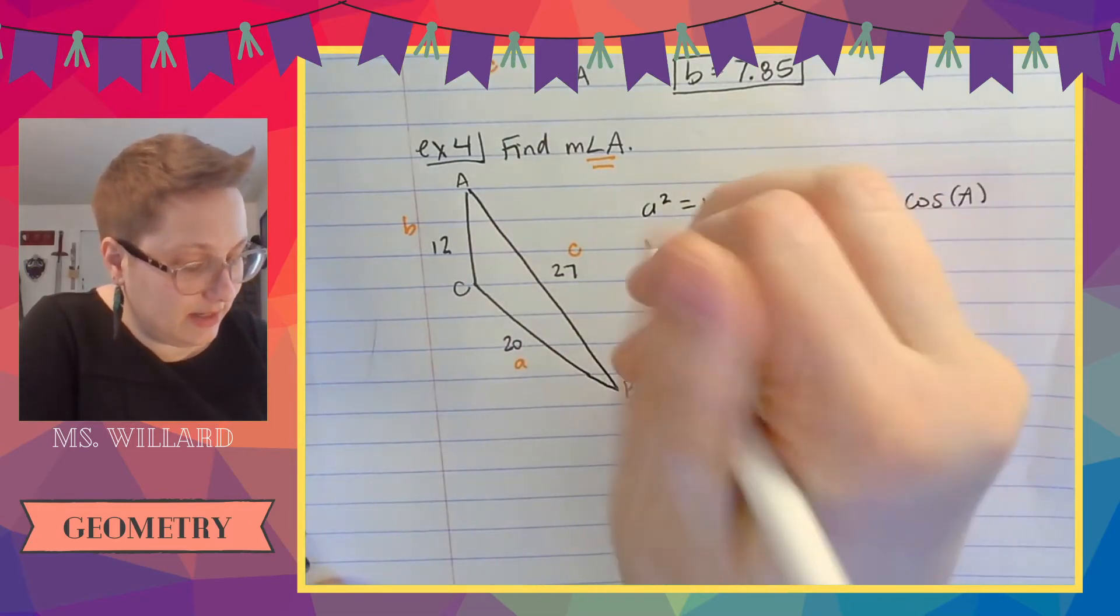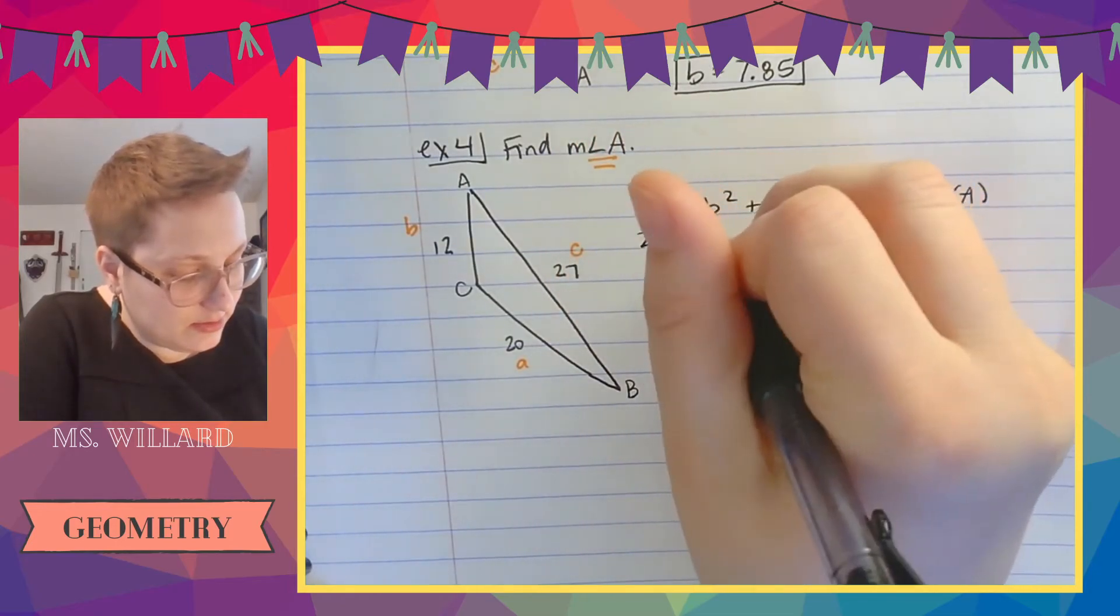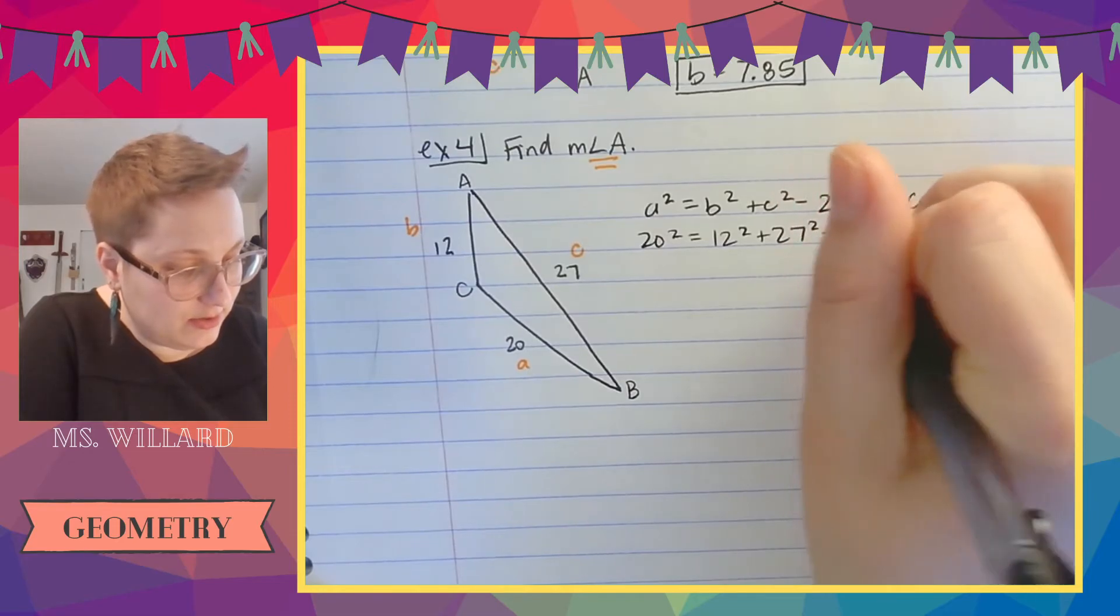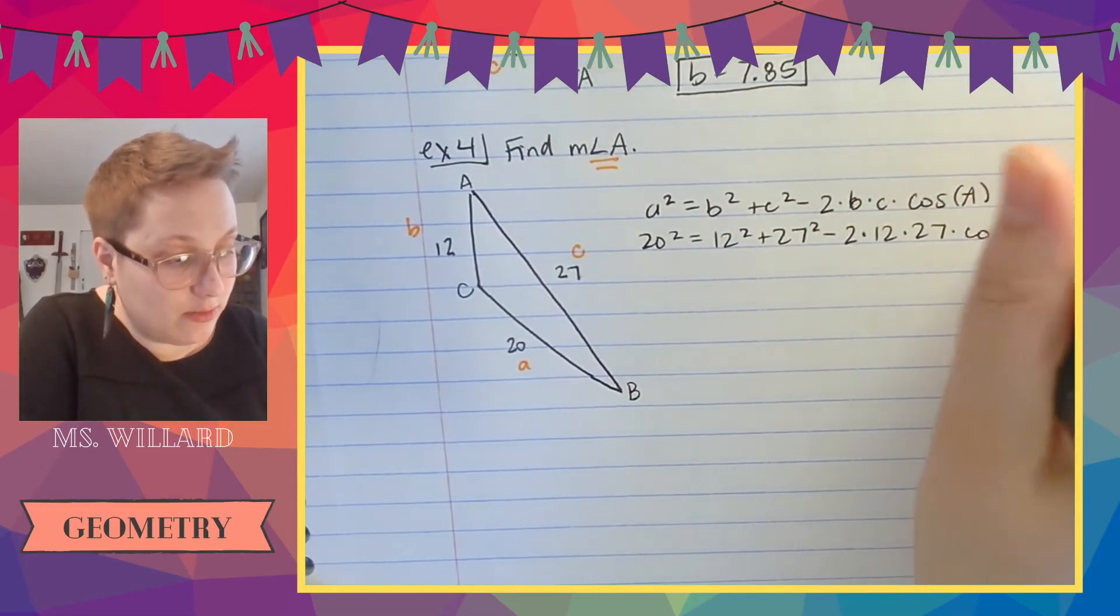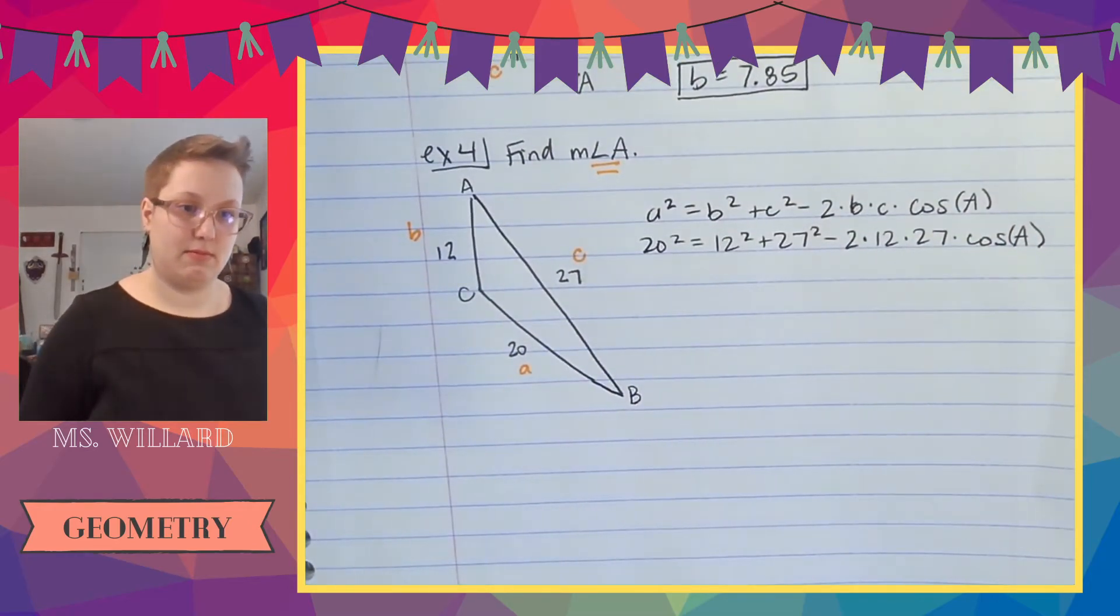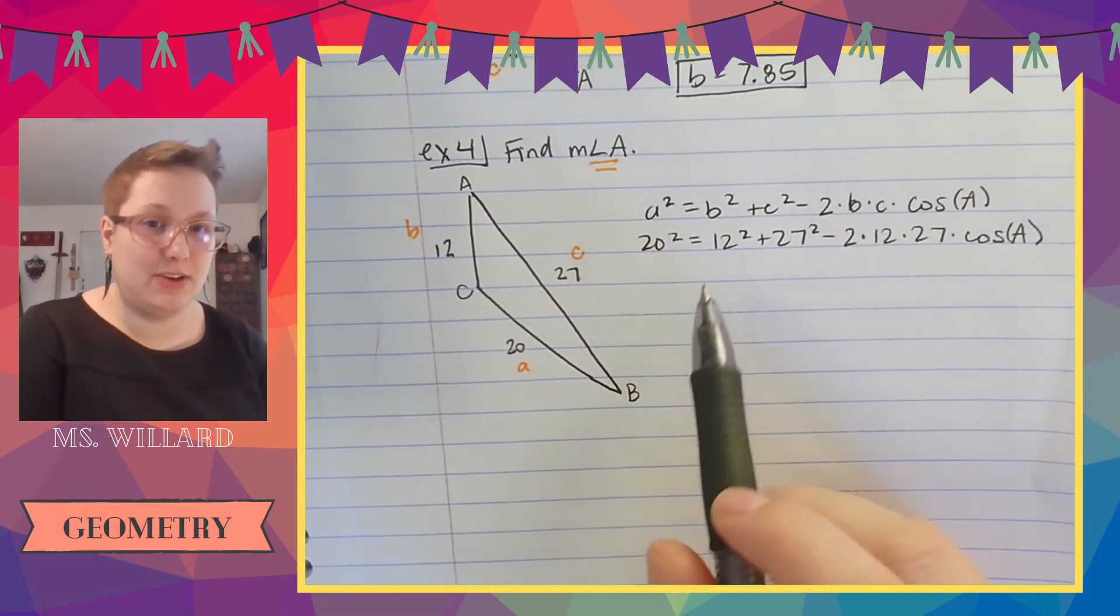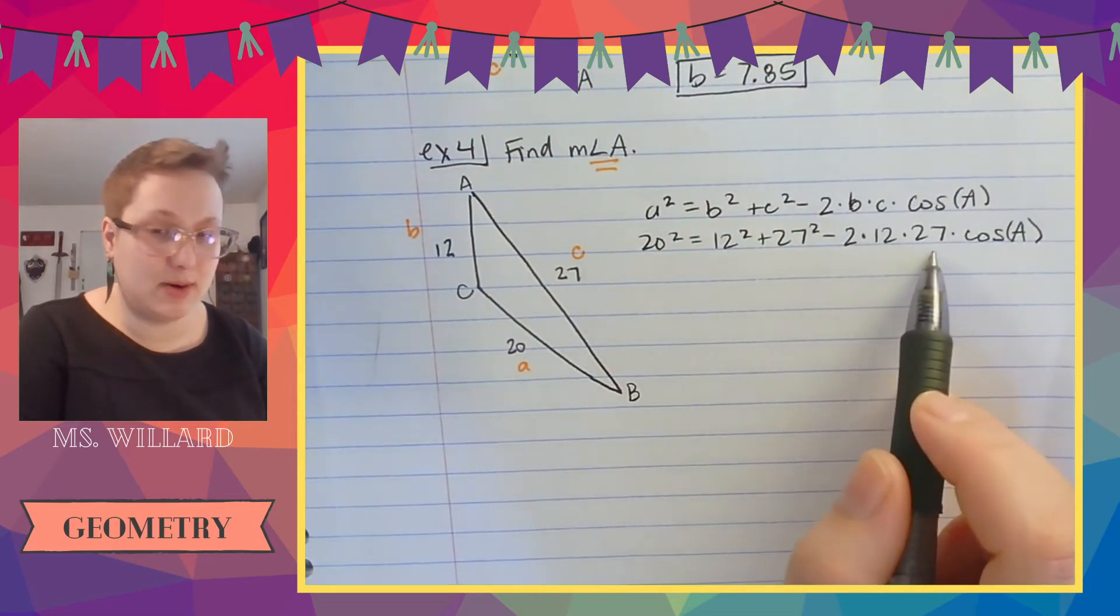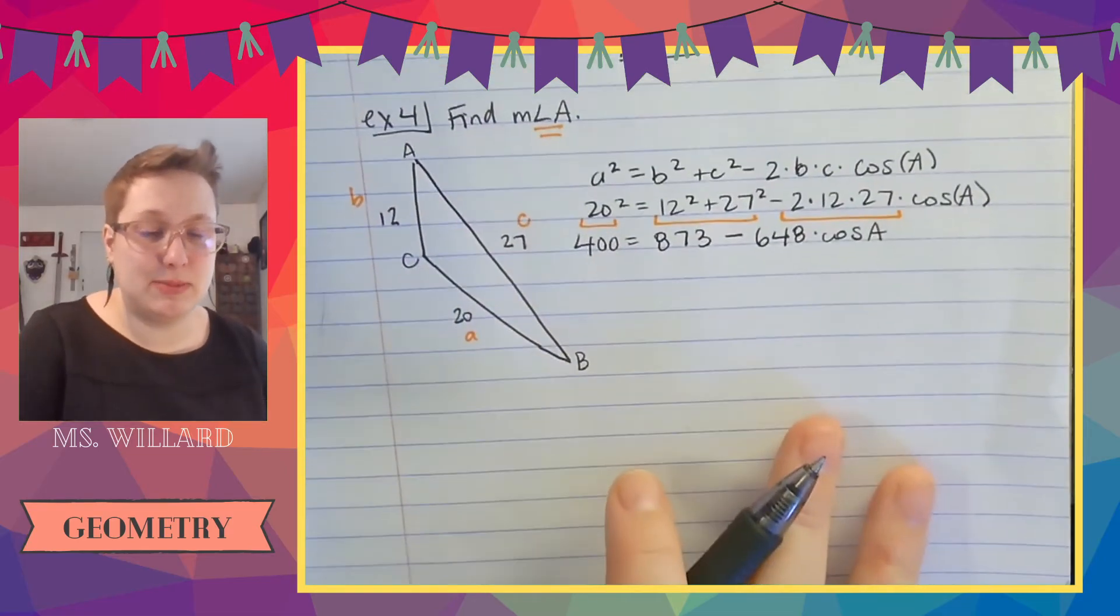A squared equals B squared plus C squared minus two times B times C times cosine of A. So 20 squared equals 12 squared plus 27 squared minus two times 12 times 27 times cosine of, I don't know. I don't know A. Here's what I'm going to do. I'm going to calculate this part, this part, and this part. And then I have to solve this like I'm solving an algebra problem.